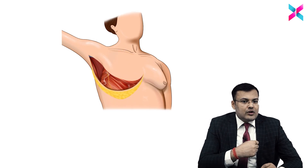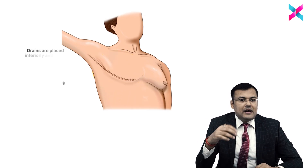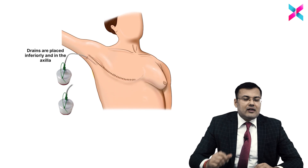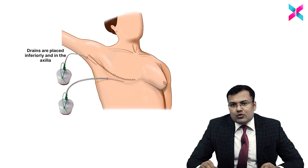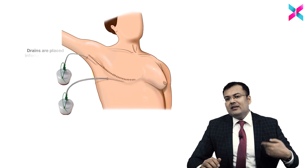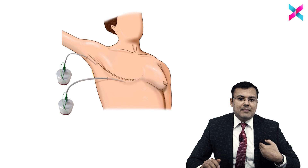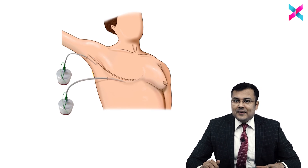Whenever lymph nodes are also removed, you are going to close the skin flap. Before closing the skin flap, we are going to insert a Romovac suction drain. One limb is placed beneath the skin flap and one limb is placed in the axilla.